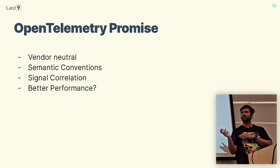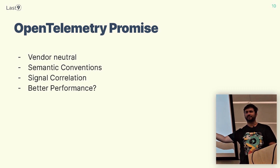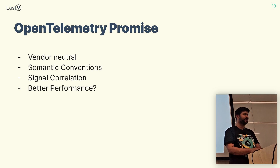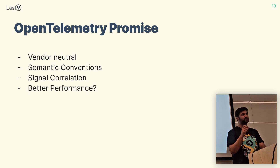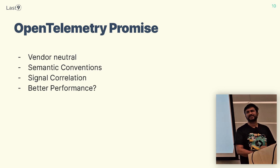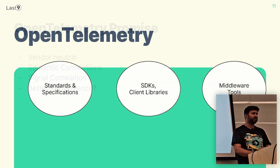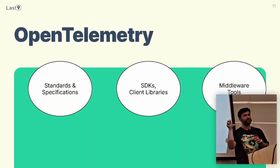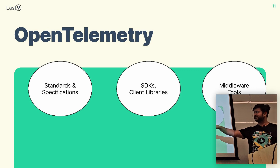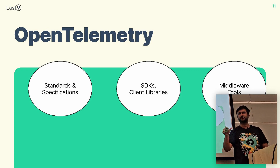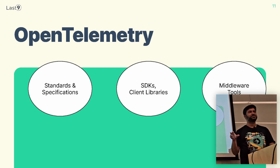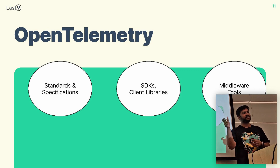As long as the destination understands the OTLP protocol — whether it's Datadog, New Relic, Levitate, or any new software — it can store that data. OpenTelemetry also provides semantic conventions, signal correlation with logs, metrics, and traces. It tries to remove performance bottlenecks that existing systems have, with design goals specifically around ensuring collection, preprocessing, and exporting performance is at an expected level. The components of OpenTelemetry include standard specifications, SDKs and client libraries for specific languages like Ruby, Python, and Golang, and middleware tools for Kubernetes or other deployment mechanisms to preprocess data and send it to a destination.